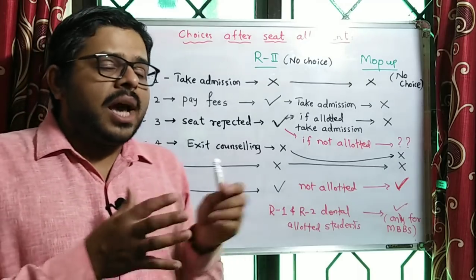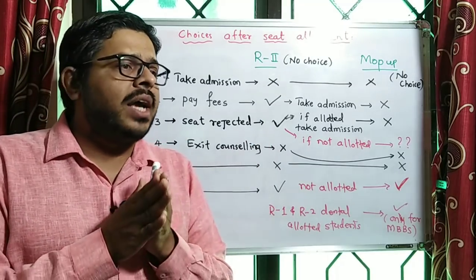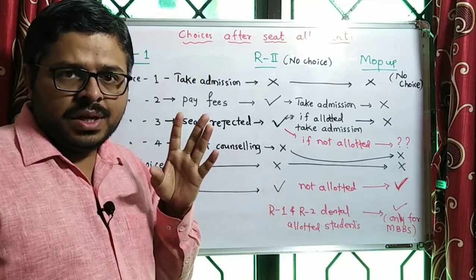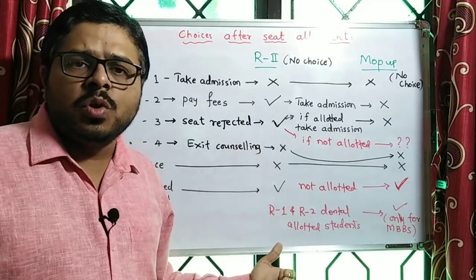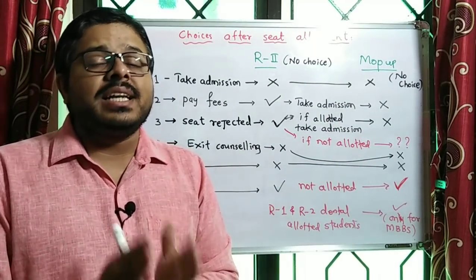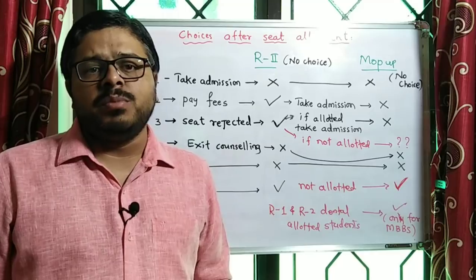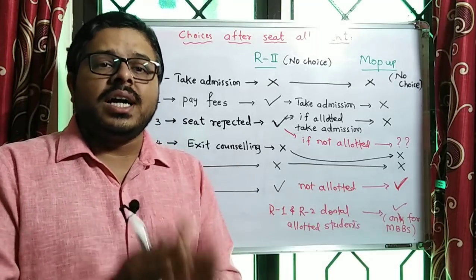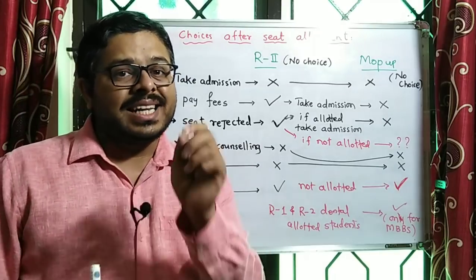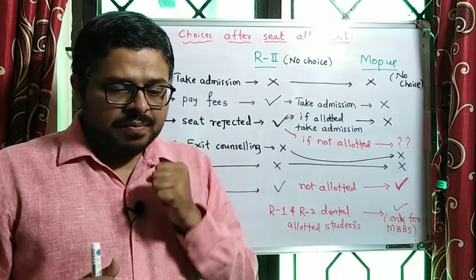Choice one: if you are allotted a seat and 100% satisfied with the seat, what will you do? You will pay the fees and take the admission. So admission procedures: you go for admission with your original documents. Attestation is required — remember, you need a gazetted officer, notary, or government college principal to attest. You have to give attested marks and one copy of attested documents to the college.